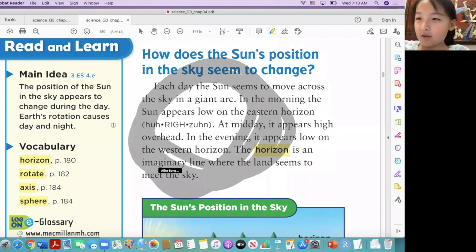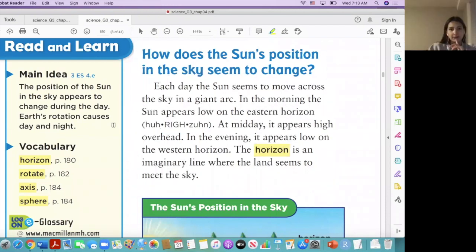We're going around, keep going. All right, okay. So how does the sun's position in the sky seem to change? Each day the sun seems to move across the sky in a giant arc. In the morning, the sun appears low on the eastern horizon. At midday, it appears high overhead. In the evening, it appears low on the western horizon. The horizon is an imaginary line where the land seems to meet the sky. So it's kind of like this line that goes across.